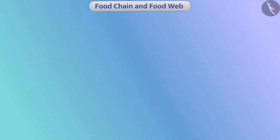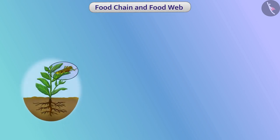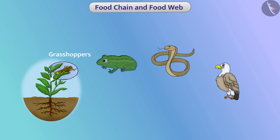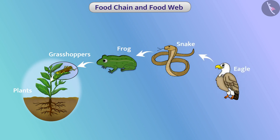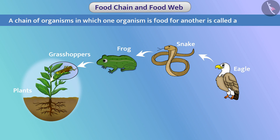Now let us learn about the food chain and food web. Organisms in any ecosystem receive food from other organisms. For example, grasshoppers get food from plants, frogs from grasshoppers, snakes from frogs, and eagles from snakes. A chain of organisms in which one organism is food for another is called a food chain.